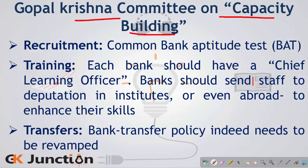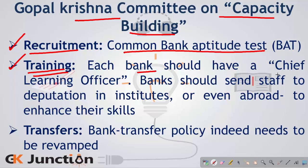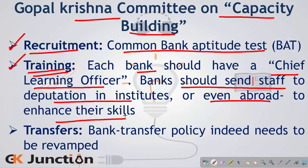Another important committee is the Gopal Krishna Committee on Capacity Building of Public Sector Banks. It gave the following recommendations: First, related to recruitment, there should be a common bank aptitude test for different public sector banks, which is in fact happening today. Next, related to training, each bank should have a Chief Learning Officer in charge of ensuring the best skills are imparted to bank officers, and banks should send staff on deputation to institutes or even abroad to enhance their skills. Lastly, with respect to bank transfers, the committee recommended that the bank transfer policy needs to be revamped and made more suited to the interest of bank employees.